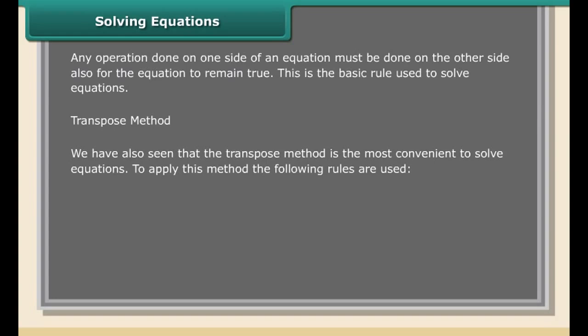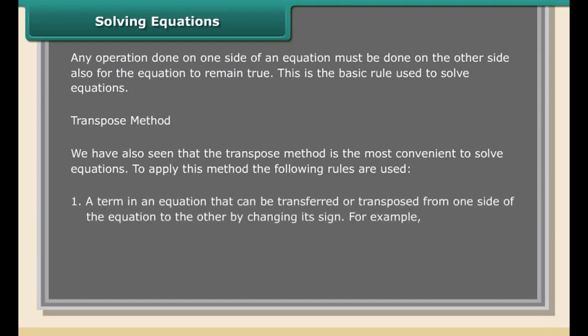LHS and RHS are the sides of an equation. Solution of equations: the value of a variable which makes the equation true is called the solution of the equation. Consider the equation x + 3 = 12 — therefore 9 is the solution since it makes the equation true. Note that other values are not solutions of x + 3 = 12 since they do not satisfy the equation.